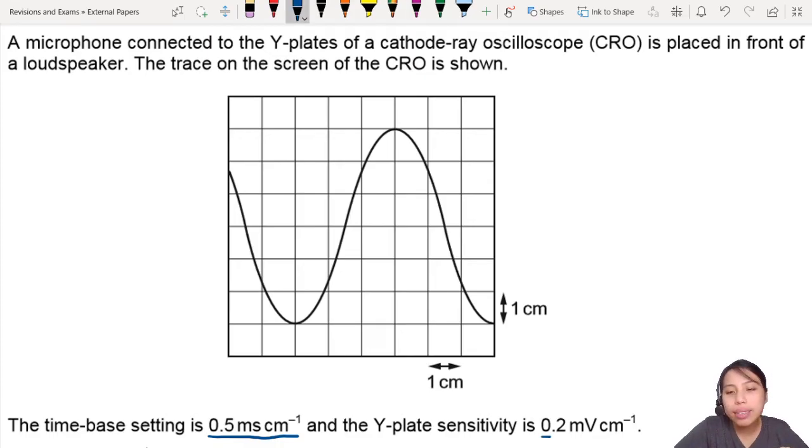Y-plate sensitivity is another setting that will adjust the vertical scale. So each box is 0.2 millivolt because each box is 1 cm. That's just what it means. They're lazy to draw axis graphs for you. Because usually when we draw graphs, we already label the boxes. But here you can change the setting. It's flexible.